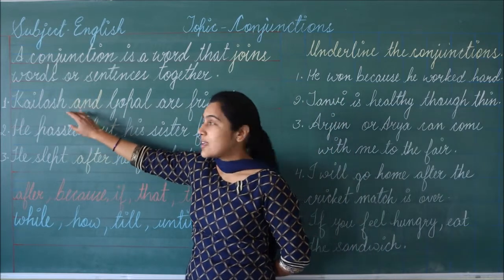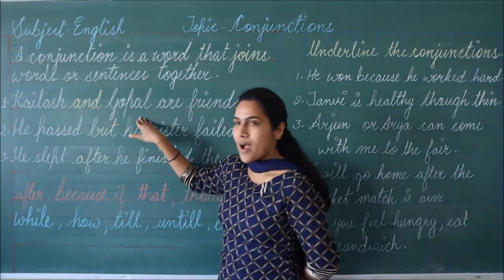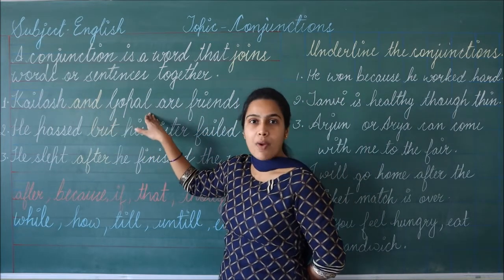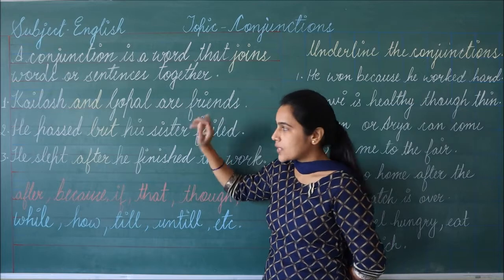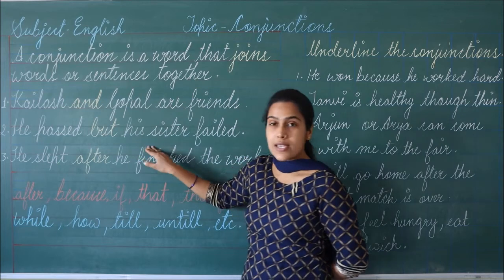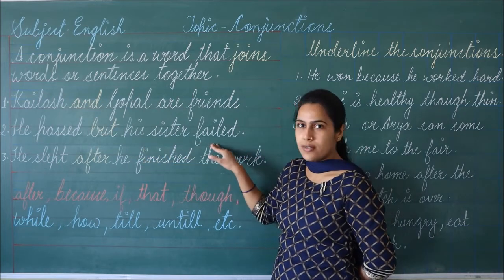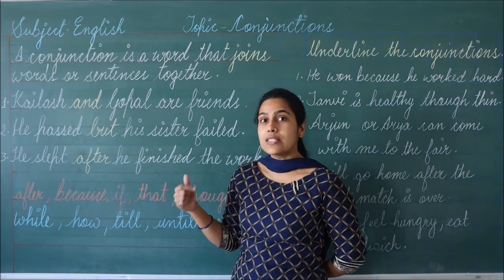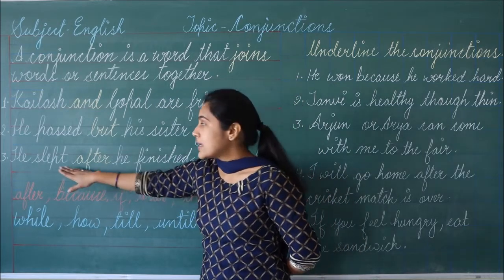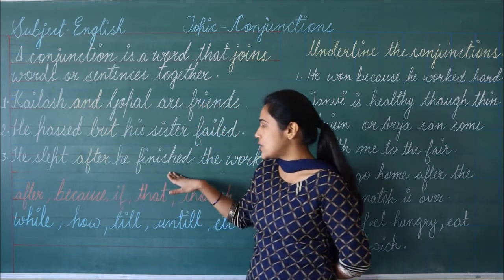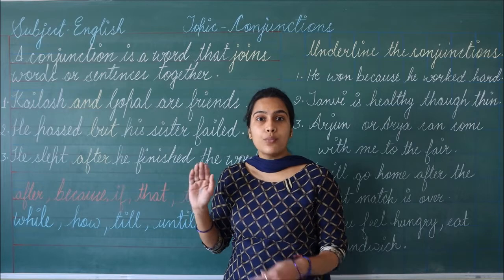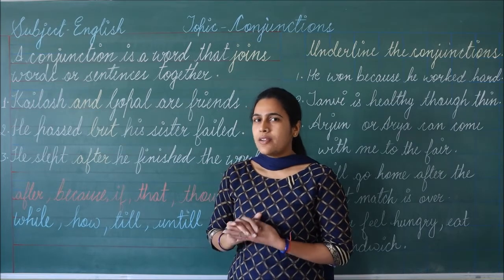The first sentence is: Kailash and Gopal are friends. Kailash और Gopal friends हैं. The second sentence: He passed but his sister failed. वो पास हो गया लेकिन उसकी sister fail हो गई. Then the third sentence is: He slept after he finished the work. वो अपना काम पूरा करने के बाद सोया.